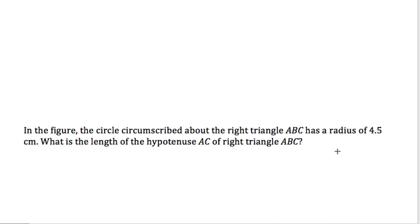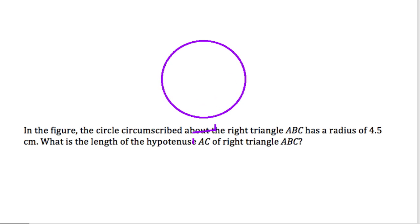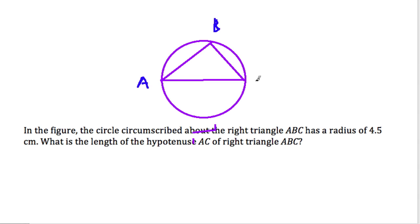Here in the figure, we have a circle circumscribed about right triangle ABC. So we have a circle with a triangle inside. Here's our circle and we have triangle A, B, C — and we're given that angle B is a right angle. Triangle ABC has a circle with a radius of 4.5 centimeters.